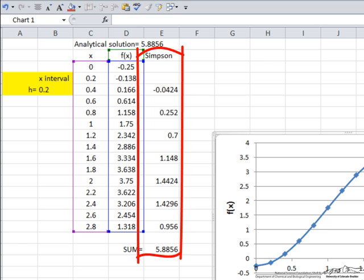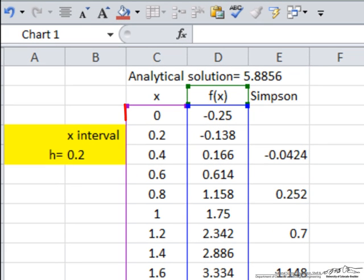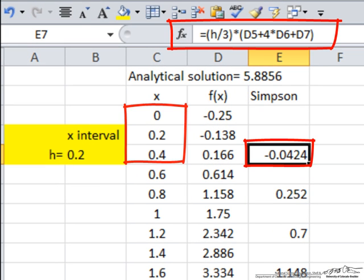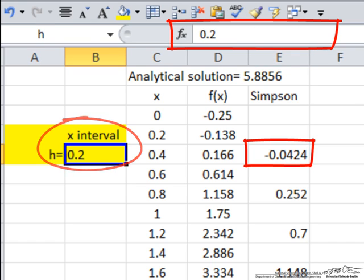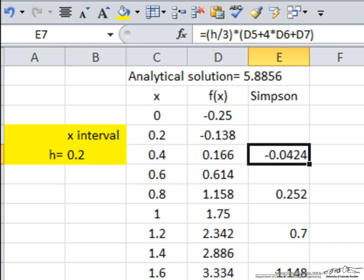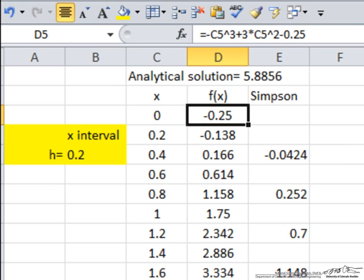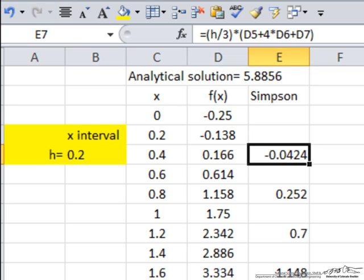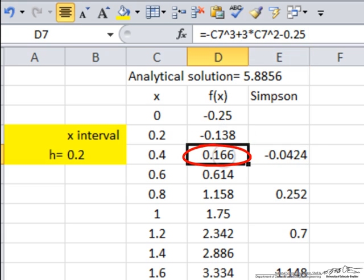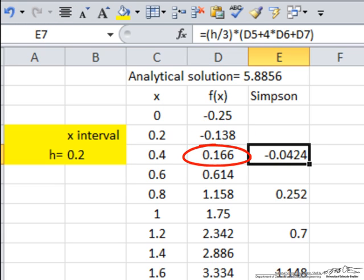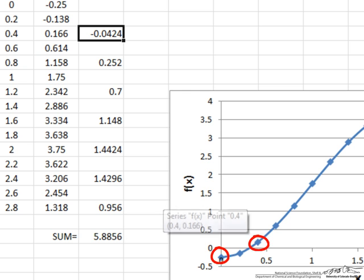And to apply Simpson's rule, we'll say from 0 to 0.4, we'll look at this cell. We have h, which we named here, so we named this value h. We have h divided by 3 multiplied by d5, which is here. And then it's going to be plus 4 times d6, which is this value, plus d7, which is this value here. So this is the integral from here to here.